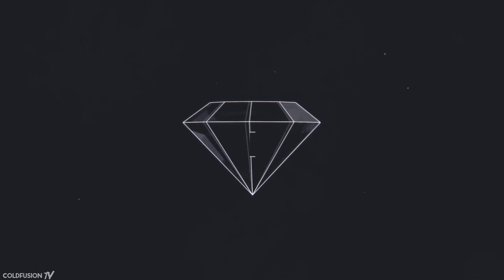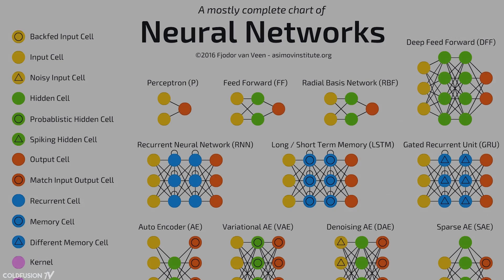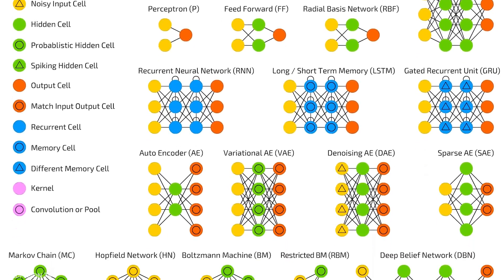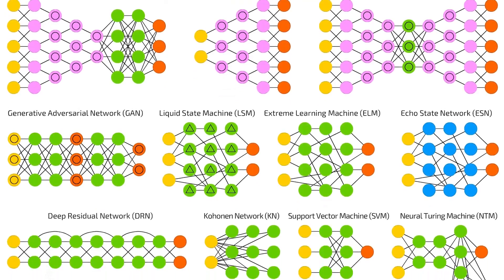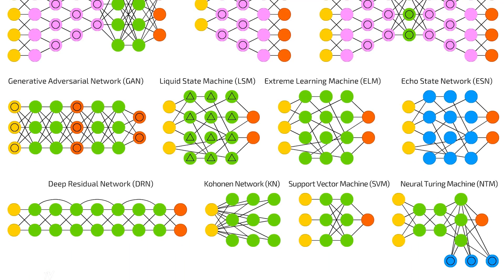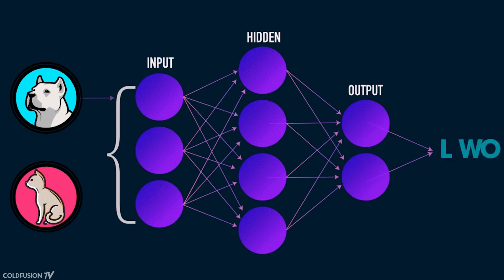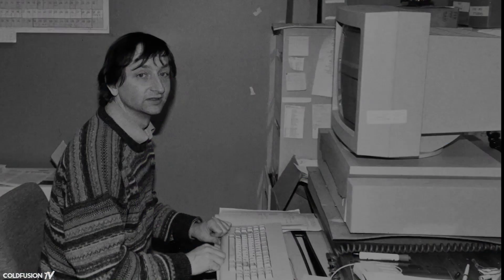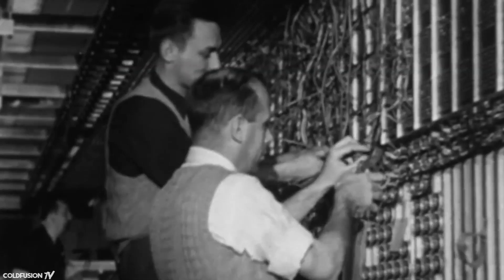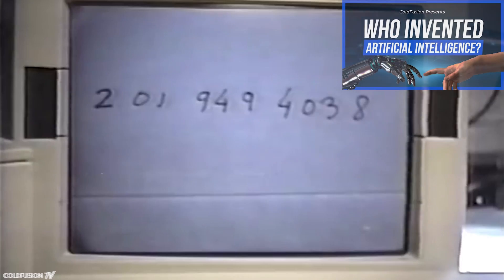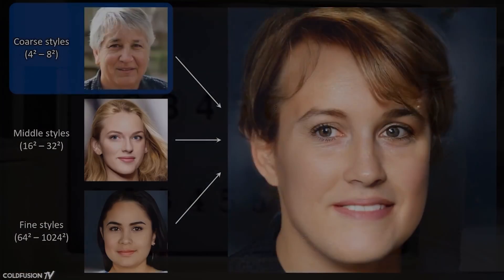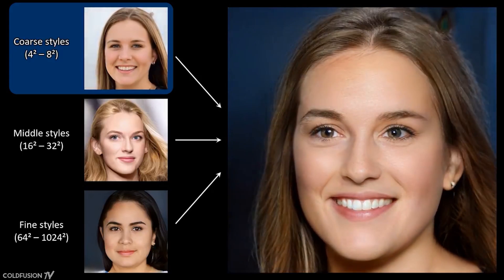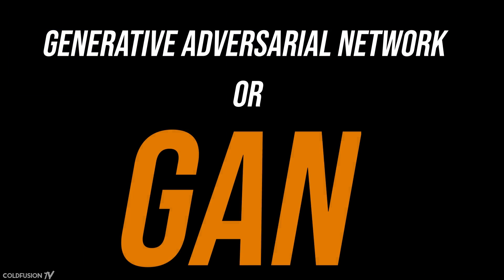A bit of background: the current generation of neural networks is fairly new, only being born in 2012. And in that time, we've already seen them change the world. Before 2012, the computer science community thought that neural networks were a waste of time. Then, a man by the name of Geoffrey Hinton showed them all wrong. I have a full episode on that story if you're interested. One of the most recent impactful developments — and what we'll be talking about today — is the concept of a generative adversarial network, or GAN for short.